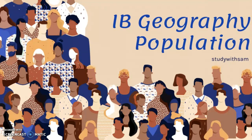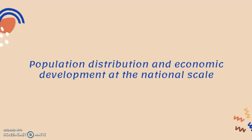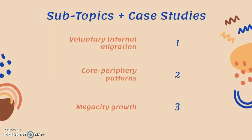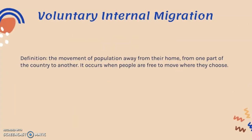This video is about population distribution and economic development at the national scale. The three subtopics in this part of the syllabus are voluntary internal migration, core-periphery patterns, and megacity growth. Megacity growth will have a separate video, so it will only be briefly discussed here. Voluntary internal migration is the movement of population from one part of the country to another — it occurs when people are free to move where they choose, staying within their own country.